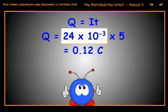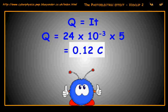Now that we have the total charge, 0.12 coulombs, we have to find out how many electrons made that charge up.